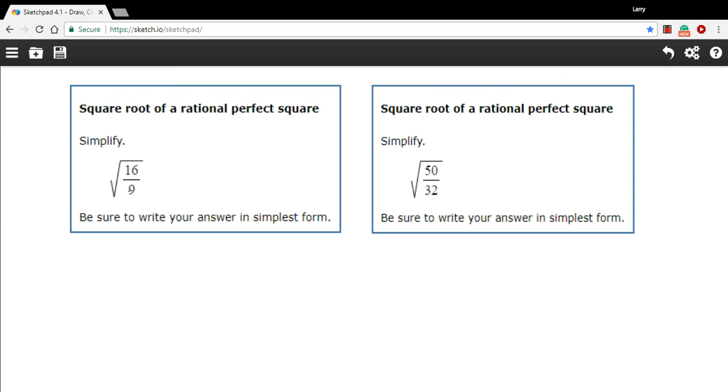In these problems we're being asked to take the square root of what's called a rational perfect square. All this word rational means is it's expressed as a fraction, so we have square roots of fractions and lucky for us these are pretty easy.